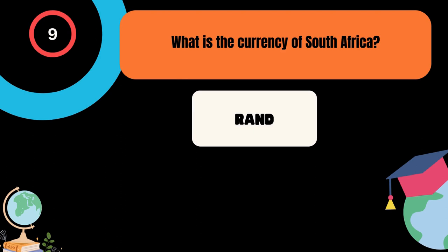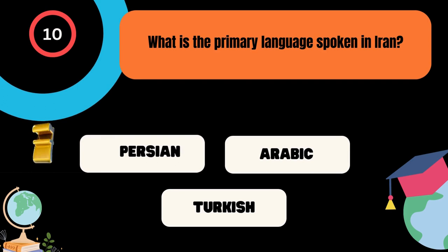What is the primary language spoken in Iran? A. Persian, B. Arabic, C. Turkish. And the correct answer is Persian.